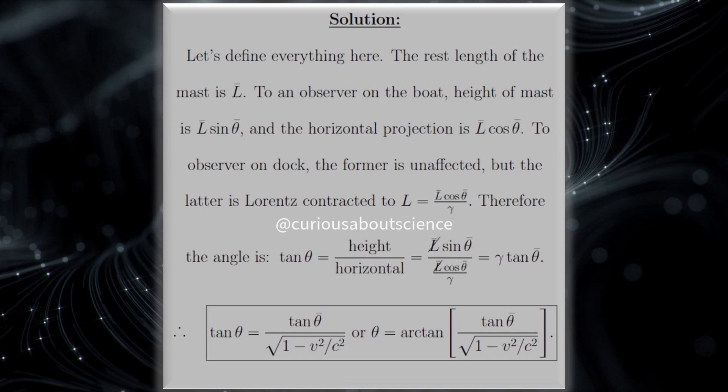The thing to note here is that once we define everything, the rest length of the mast is L bar. So, to an observer on the boat, the height of the mast is just L sine theta, because it's the opposite length. And the horizontal projection is L bar cosine theta bar.